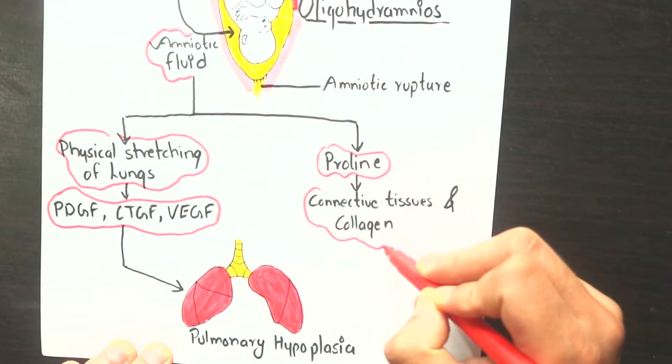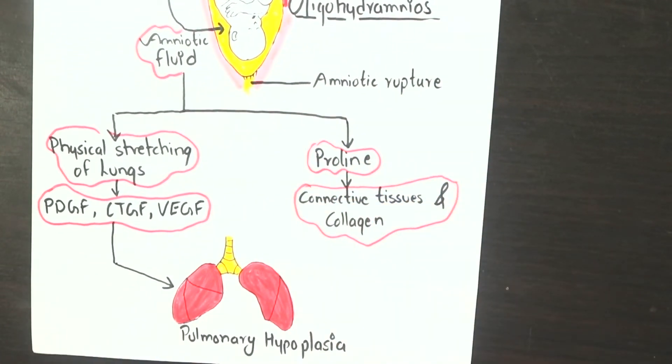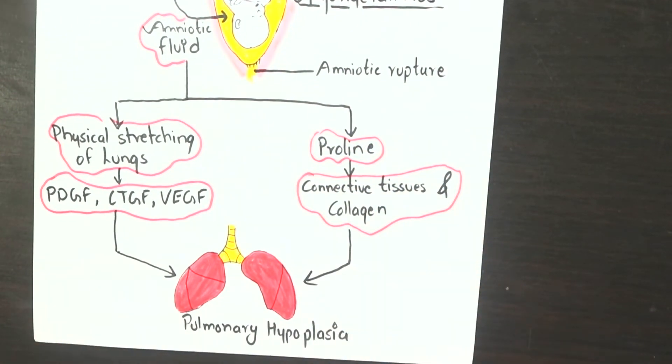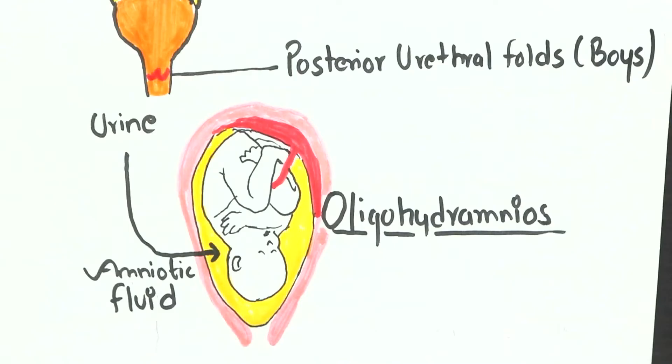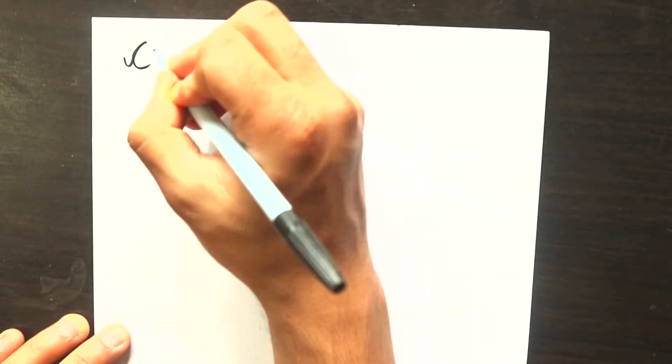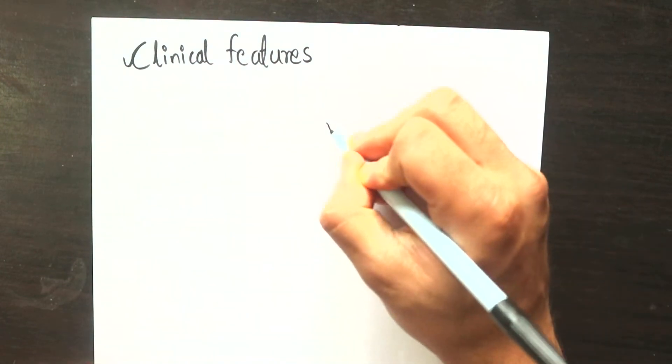Hence, the reduction in amniotic fluid causes formation of underdeveloped lung. Also, another major function of amniotic fluid is to provide mechanical cushioning to the developing fetus, and low amount of amniotic fluid causes compression of fetus which results in different developmental abnormalities. So let's talk about those abnormalities.